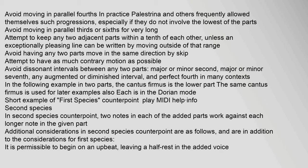Avoid dissonant intervals between any two parts: major or minor second, major or minor seventh, any augmented or diminished interval, and perfect fourth in many contexts. In the following example in two parts, the cantus firmus is the lower part; the same cantus firmus is used for later examples also. Each is in the Dorian mode. Short example of first species counterpoint.